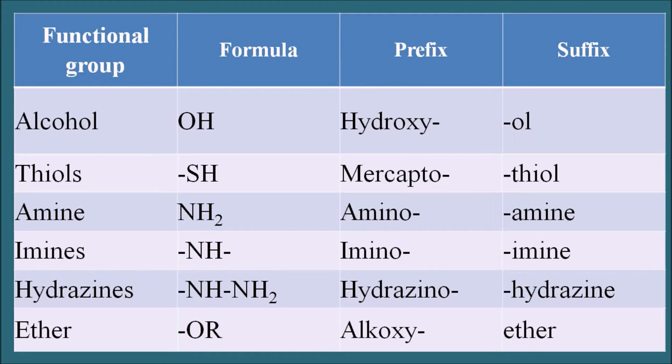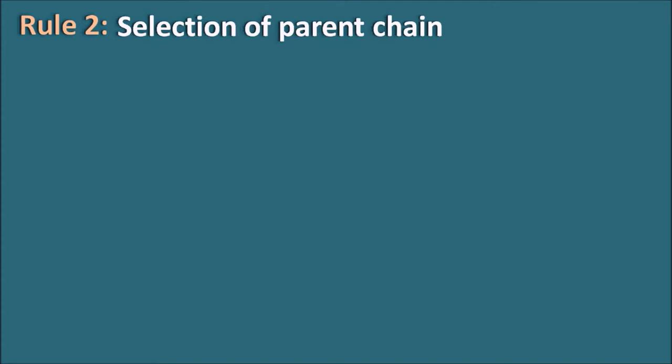Once we know this priority order we can easily identify the principal functional group, fixing IUPAC Rule 1 — the selection of the principal functional group. Now let us go with Rule 2: the selection of the parent chain. Once we identify the principal functional group, we select the parent chain, which is the longest possible chain that includes the principal functional group.